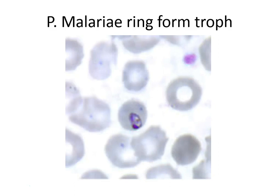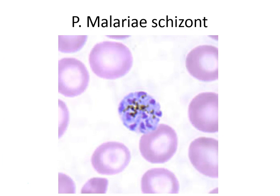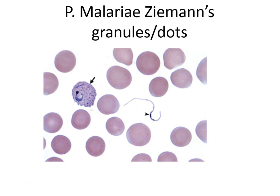P. malariae has a 72-hour life cycle. The red cells are mature, so they're the correct size. The rings are smaller — only one-sixth of the red cell — with a heavier chromatin dot. The troph can have a band or bar shape. The schizont has a daisy-petal arrangement with 6 to 12 merozoites. This species can have Ziemann's dots, which are pink dots in the cytoplasm.